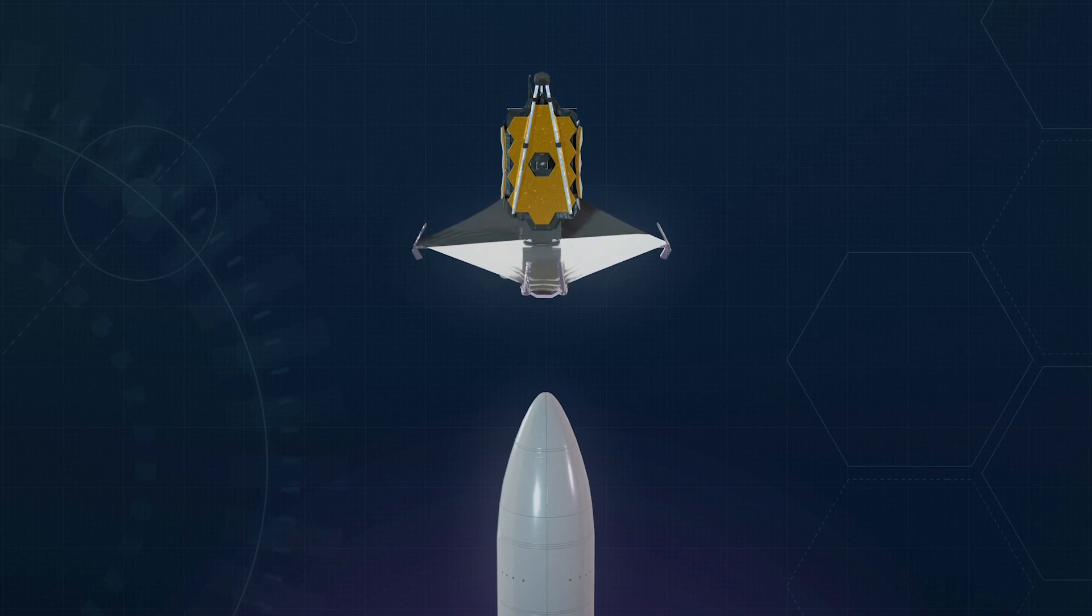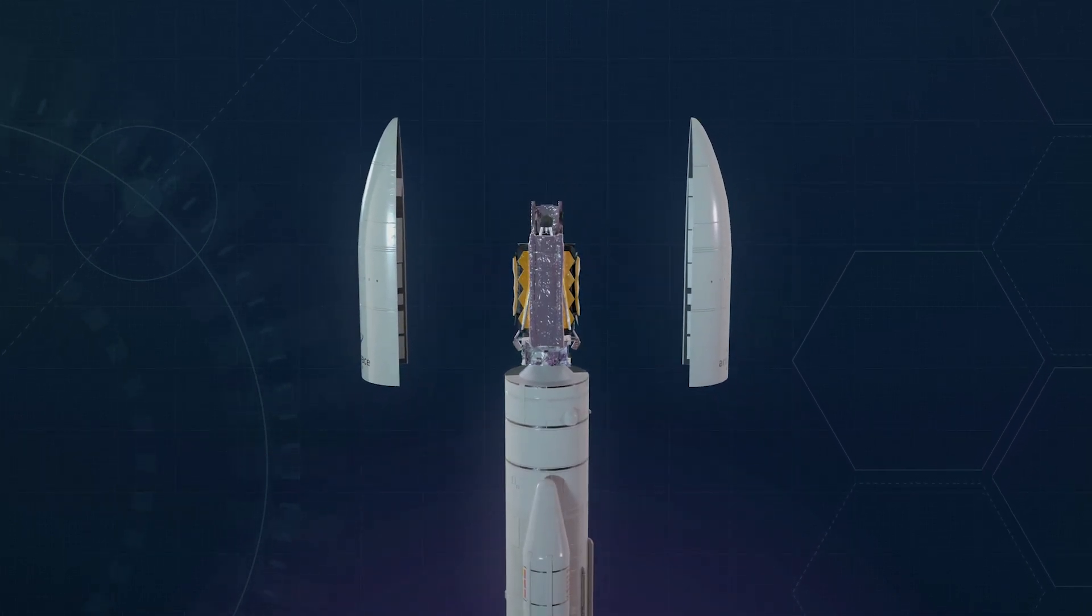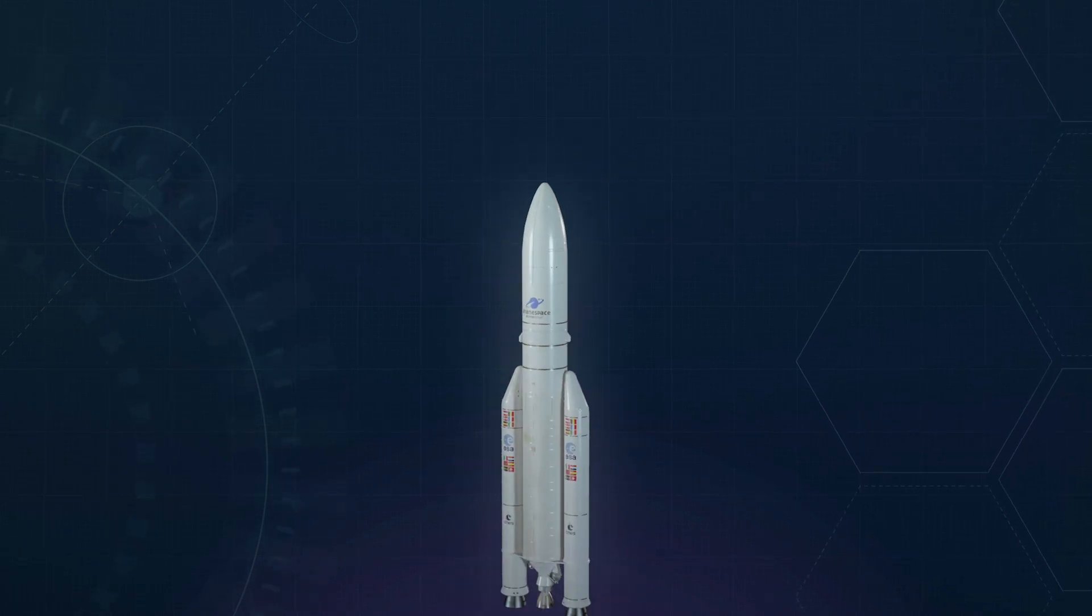Engineers designed it to be folded, like origami, to squeeze inside the European Space Agency's five-meter diameter Ariane V rocket fairing.